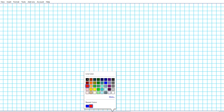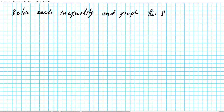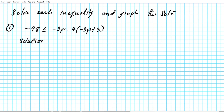The instructions for the examples are as follows: solve each inequality and graph the solution. Let's start with question number one. We have the inequality: negative 48 is less than or equal to negative 3p minus 4 times the quantity negative 3p plus 3. Let's go ahead and solve this inequality and sketch the resulting graph.